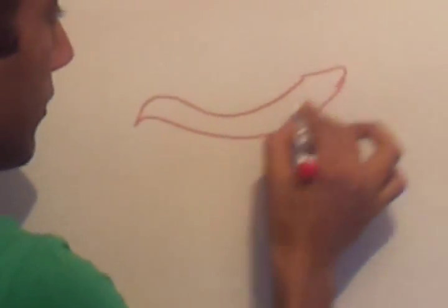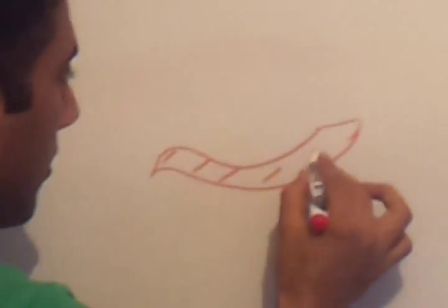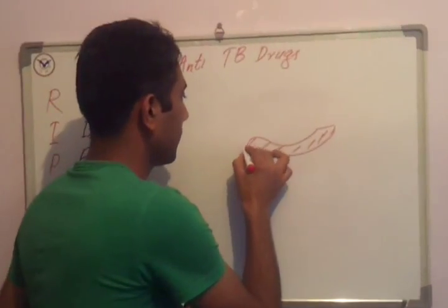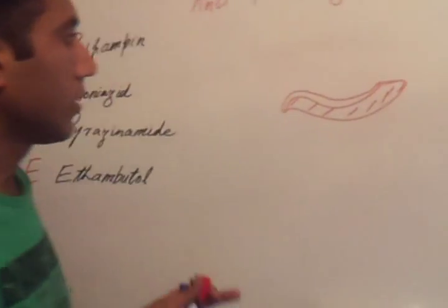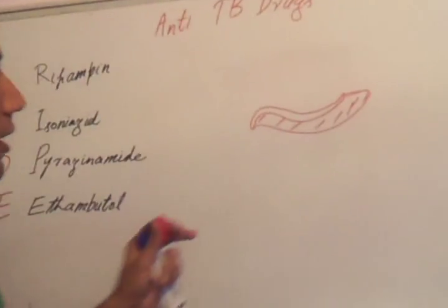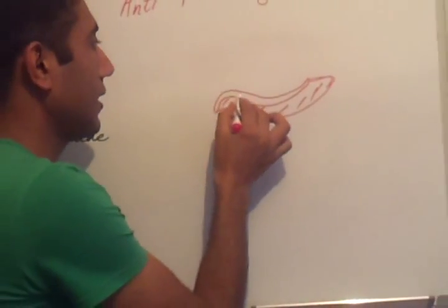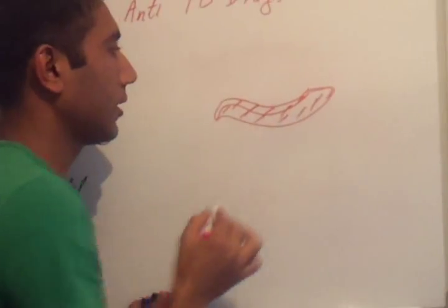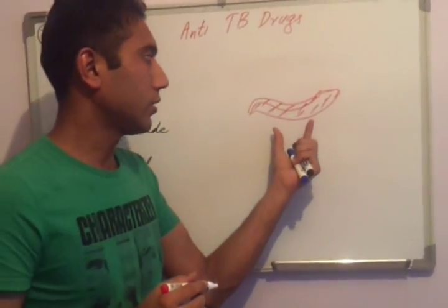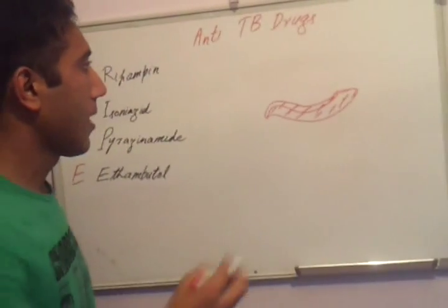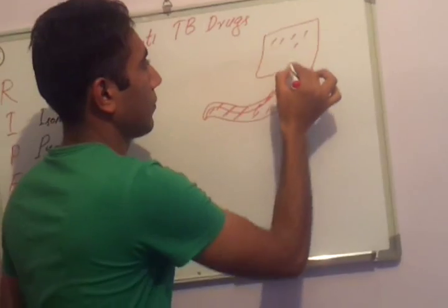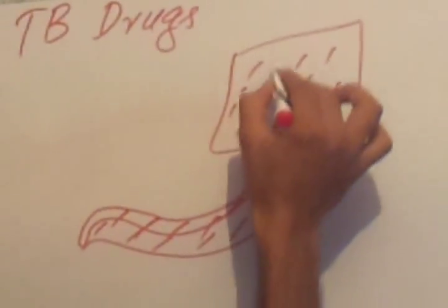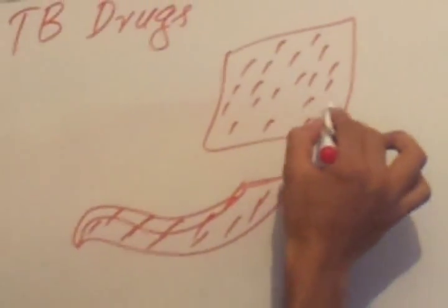Mycobacterium tuberculosis is a comma-shaped, acid-fast bacillus. It does not stain with Gram stain — it is neither Gram-positive nor Gram-negative. It uses acid-fast stain and appears pink on acid-fast staining. Under microscopic examination, these are very small rods, which is why they are called bacilli.